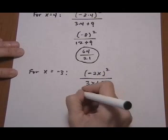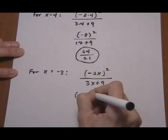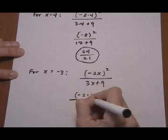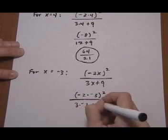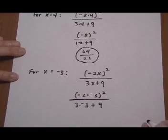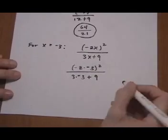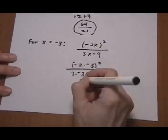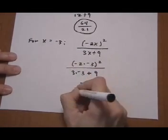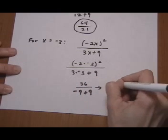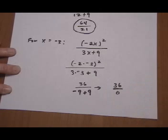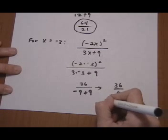So we put in x is minus 3, and we get minus 2 times minus 3 squared over 3 times minus 3 plus 9. And that gives us 6 squared, or 36, over minus 9 plus 9, which goes to zero on the denominator, so we have an undefined expression.